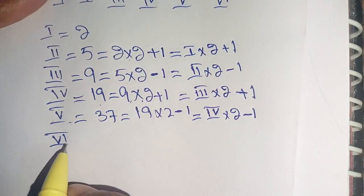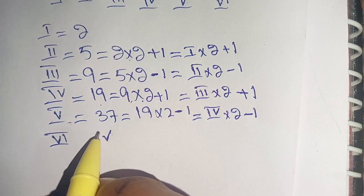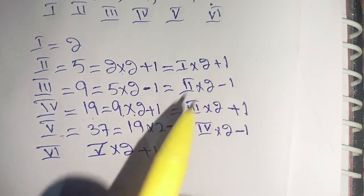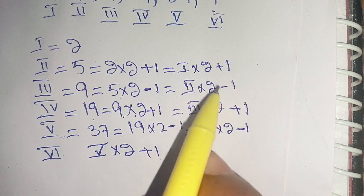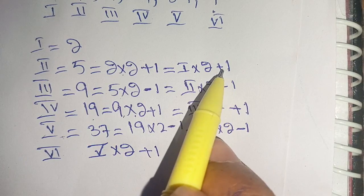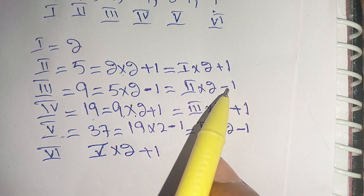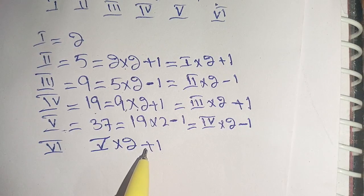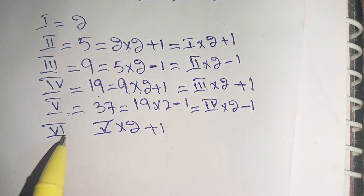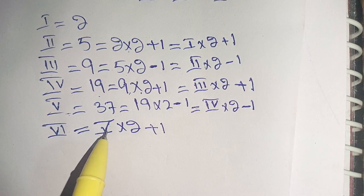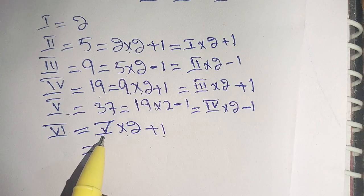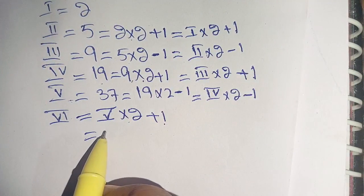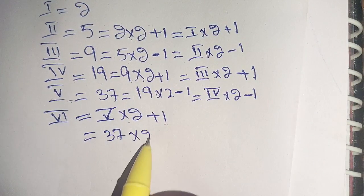So the pattern alternates: first we add plus 1, then subtract minus 1, then add plus 1, then subtract minus 1, then add plus 1. Therefore, the sixth term equals the fifth term times 2 plus 1. The fifth term is given as 37, so we calculate 37 times 2 plus 1.